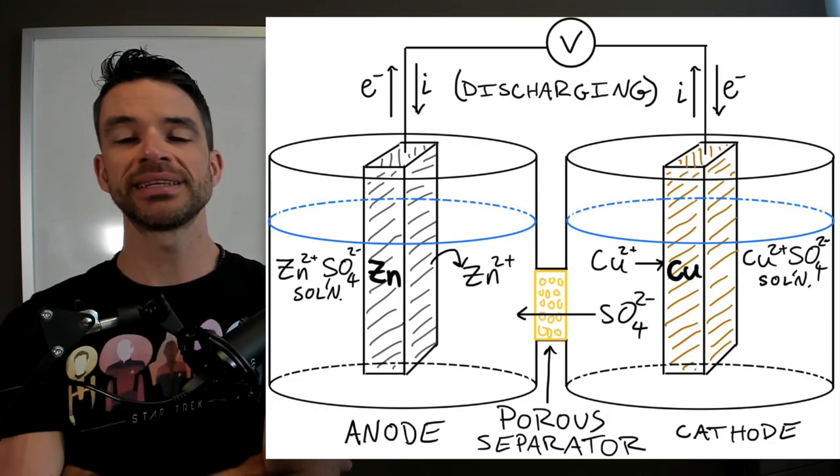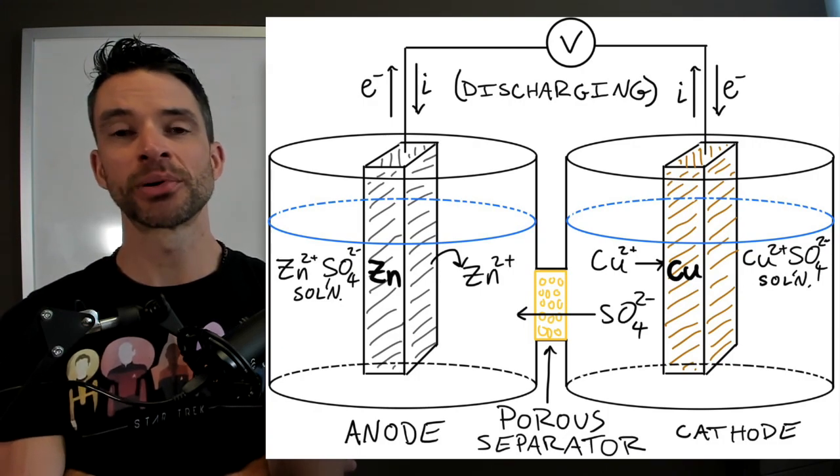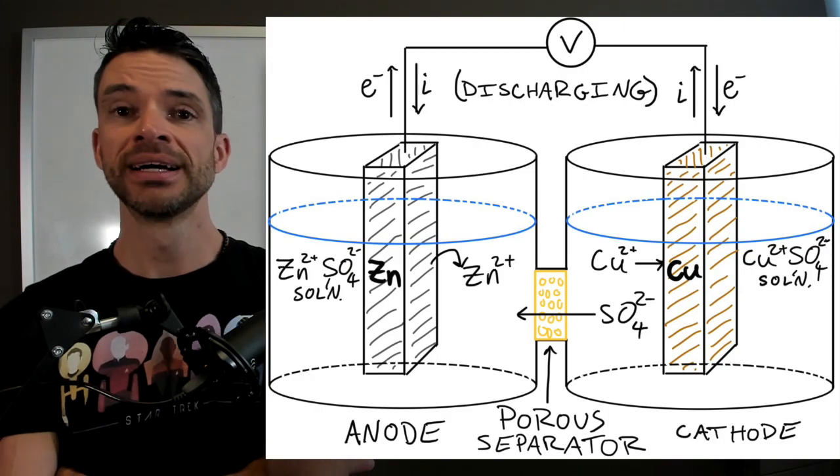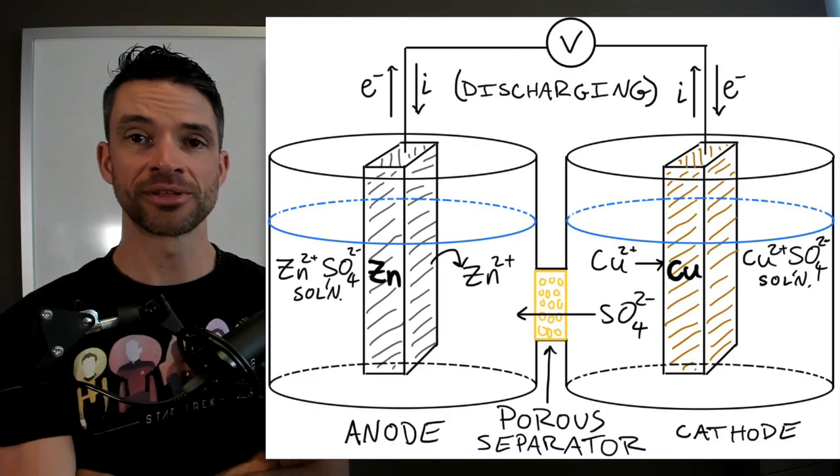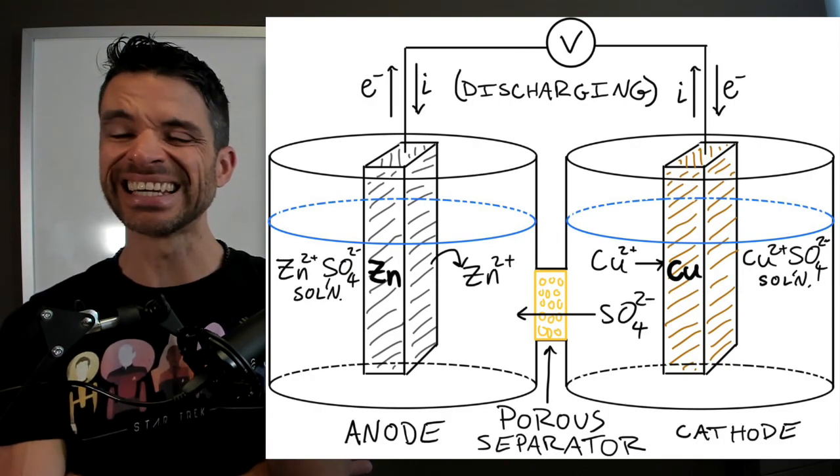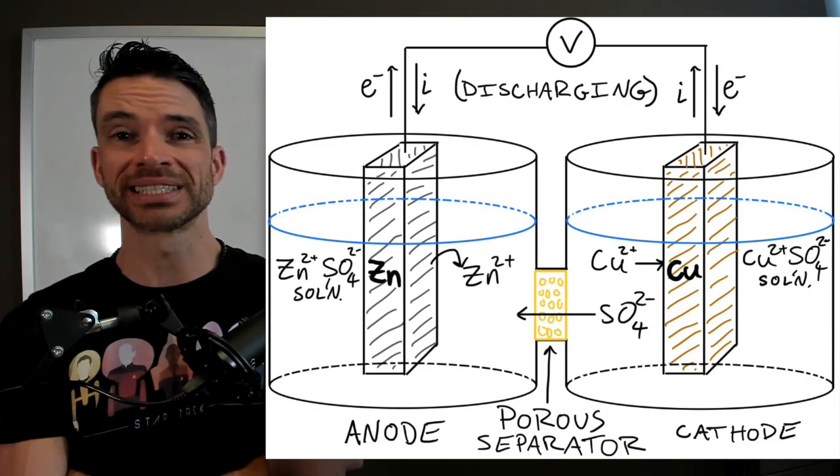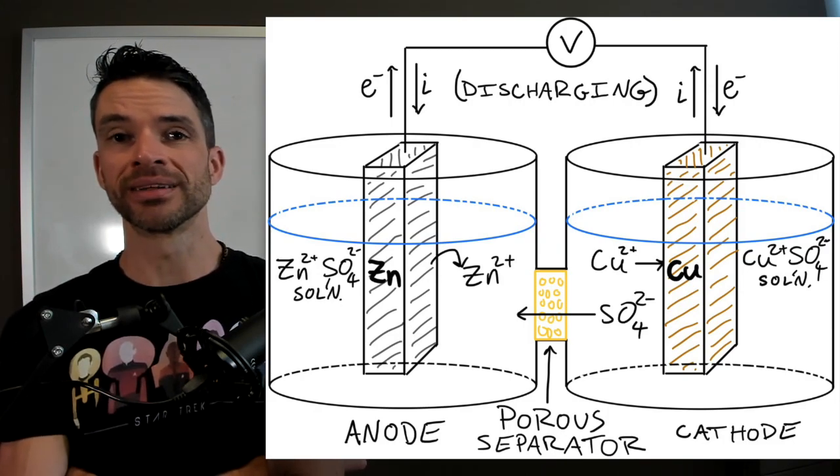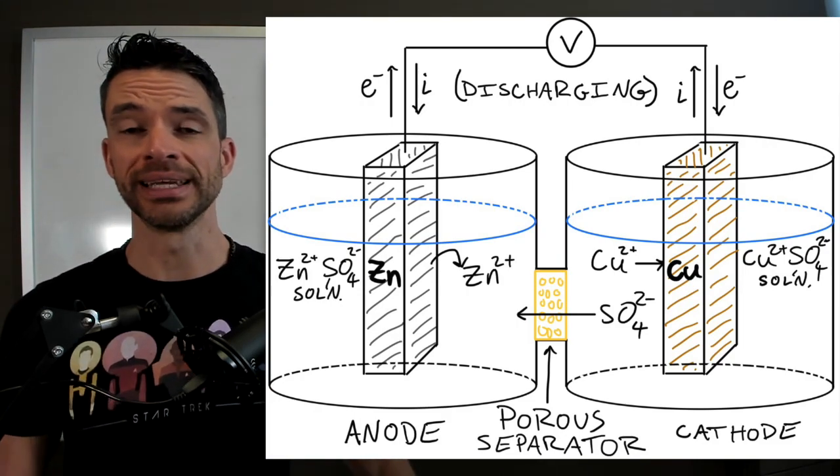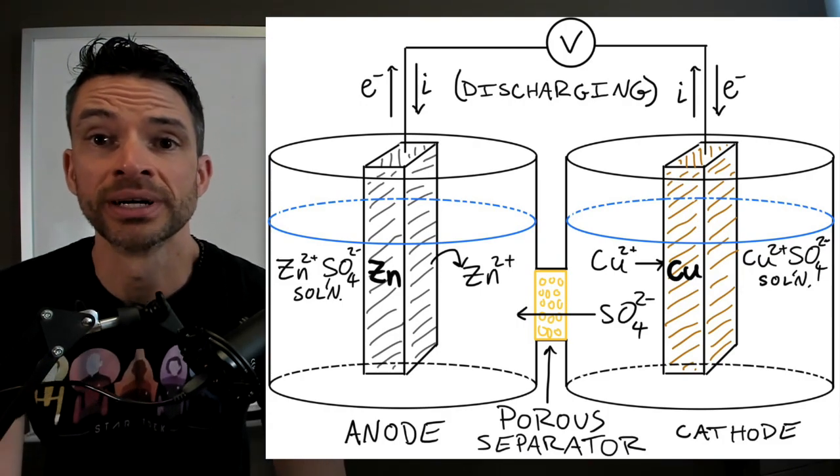And this works basically by reduction of the copper two plus ions. They plate out into solid copper, and that's called the cathode. I usually think of the T in cathode as being plus. So that's the positive terminal. It's where the copper is reduced to copper zero.